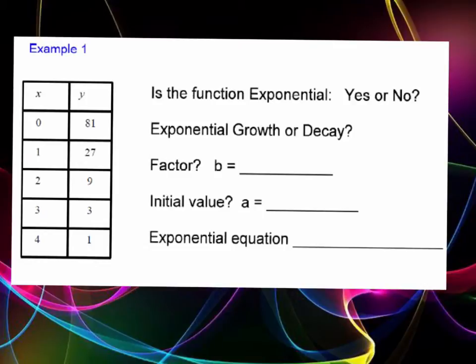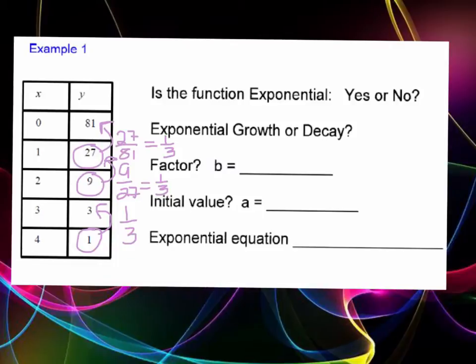Here is our example one. We have a table and we'll determine whether this function is exponential or not. To do that, we're going to divide the previous values. Take 27 and divide it by 81, which gives you one-third. Then take 9 divided by 27, which is also one-third. Then from 1 to 3 is one-third. Notice it has the same exact factor. We're not adding or subtracting values, instead we're dividing or multiplying by a number, so this is exponential.